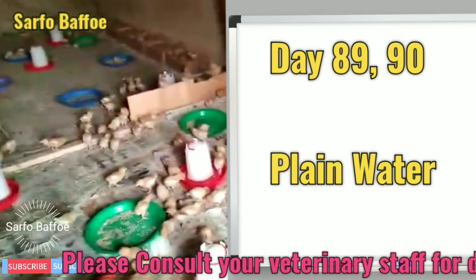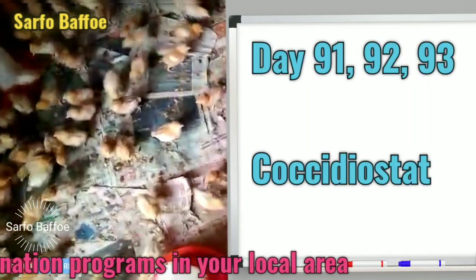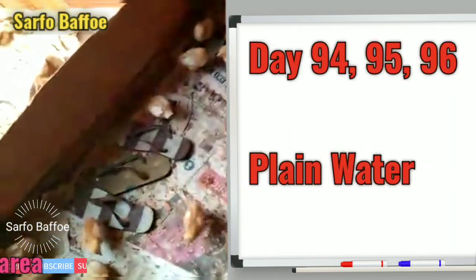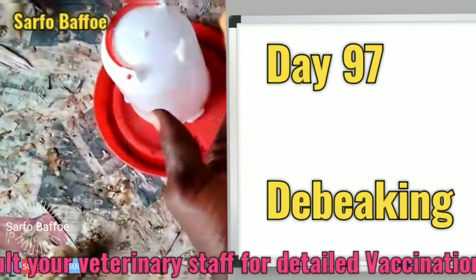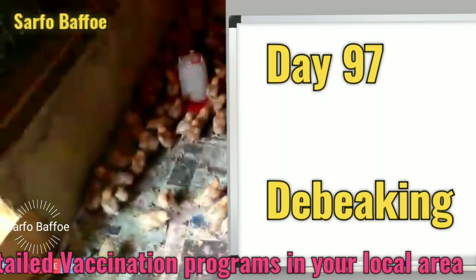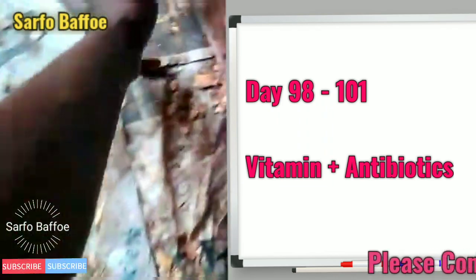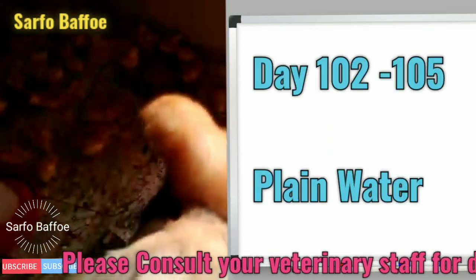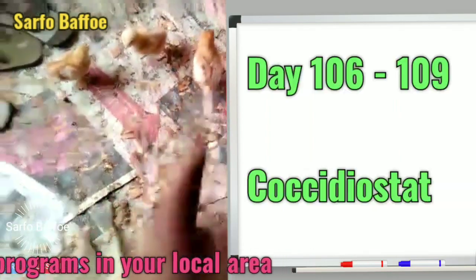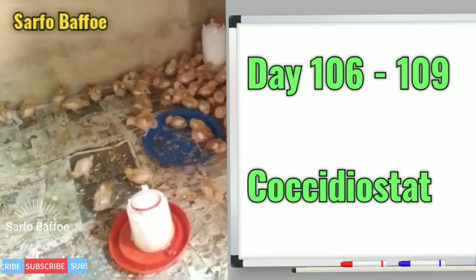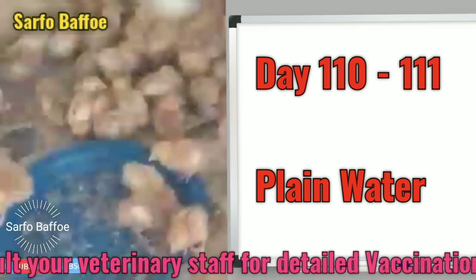Day 89 and day 90 we give them plain water. Day 91 to day 93 we give them Cocydial Stat again, medicine for coccidiosis. Day 94 to day 96 we give them plain water. Day 97 we debeak them. Please note: if you debeak them for the first time, their drinking and eating will reduce. Day 98 to day 101 we give them vitamins and antibiotics only. Day 102 to day 105 we give them plain water. Day 106 to day 109 we give them Cocydial Stat again. Day 110 to day 111 we give them plain water.